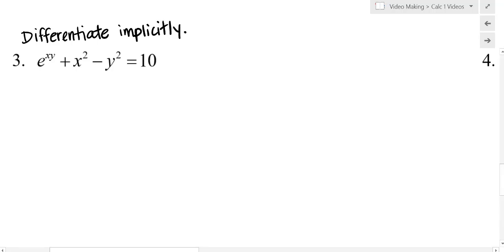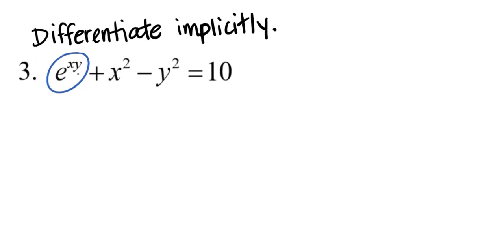Differentiate implicitly: e to the xy plus x squared minus y squared equals 10. The e to the xy in this problem is definitely going to be the toughest part, so let's take a look at that right off the bat. The derivative of e is itself times the derivative of that exponent, so we need to figure out what the derivative of xy is.